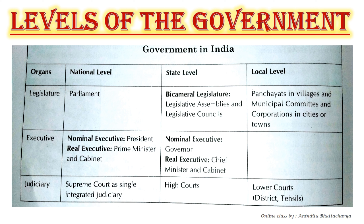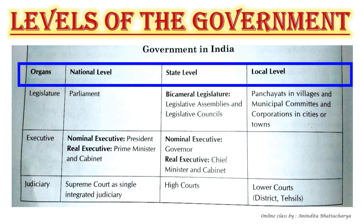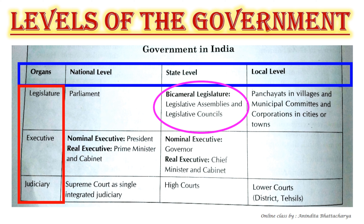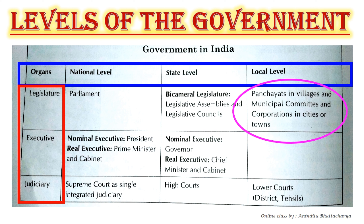Look at the table, my dear students. This table has four columns: Organs, National Level, State Level, and Local Level. The first organ is the Legislature. At the national level, the legislature is called Parliament (Sansad). At the state level, it is called the Bicameral Legislature — that is, the Legislative Assembly or Legislative Council. At the local level, the legislature is called Panchayat in villages and Municipal Committees or Corporations in cities and towns.